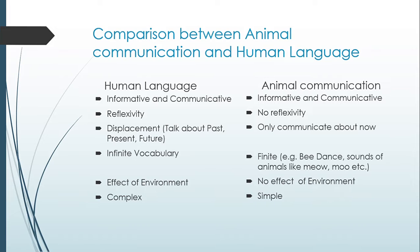The next important difference is displacement. Humans talk about the past, the present, and they can also predict the future. For example, I might say: I went to the market and saw a food vendor and bought some snacks — they were really tasty. But today when I went, they were not tasty. I think I'll go tomorrow and taste them again. So I've talked about my past, present, and future.